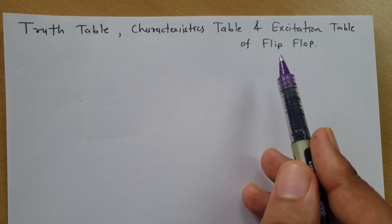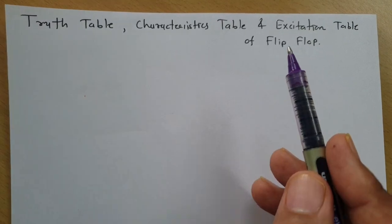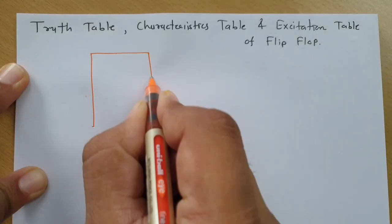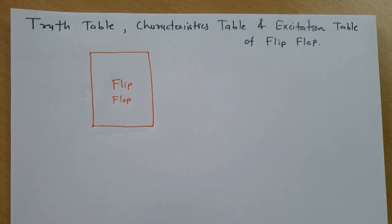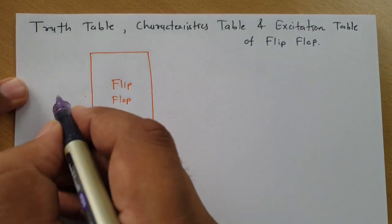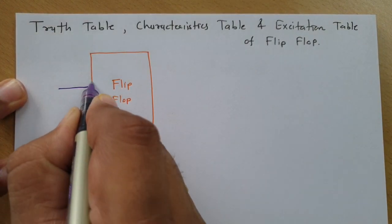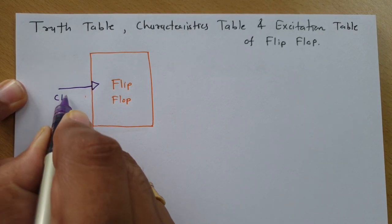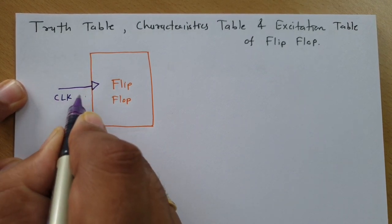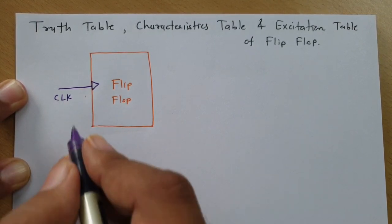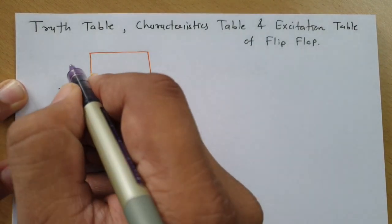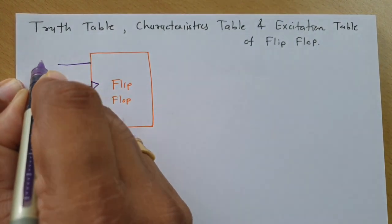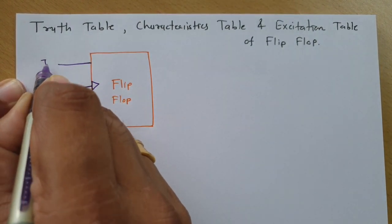I'll explain first what is the basic block diagram of a flip-flop. In a flip-flop, the very important terminal is the clock signal. Here I have given one clock signal, and there is an input terminal that I call I-in.